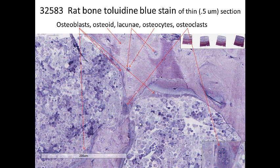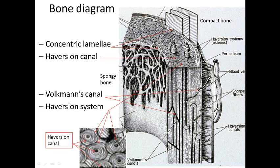Looking at a toluidine blue stained section, this is bone and this is cartilage. We can see osteoclasts eating up bone and osteoblasts laying down bone. This is secondary spongiosa, which does not have a cartilage core. Osteoid is bone, lacunae are the spaces, osteoclasts are multinucleated cells, and osteoblasts are laying down more bone.